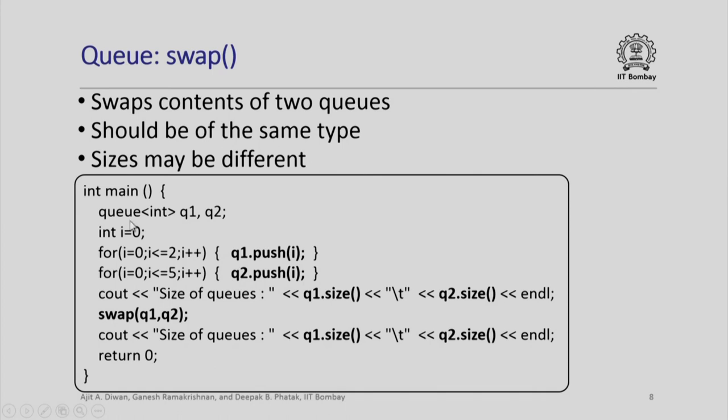Here is the main program. We push an integer element i into q1, we push an integer element i into q2, but this loop runs from 0 to 2, this loop runs from 0 to 5. That means, this has three elements, this has six elements. So the sizes are different.